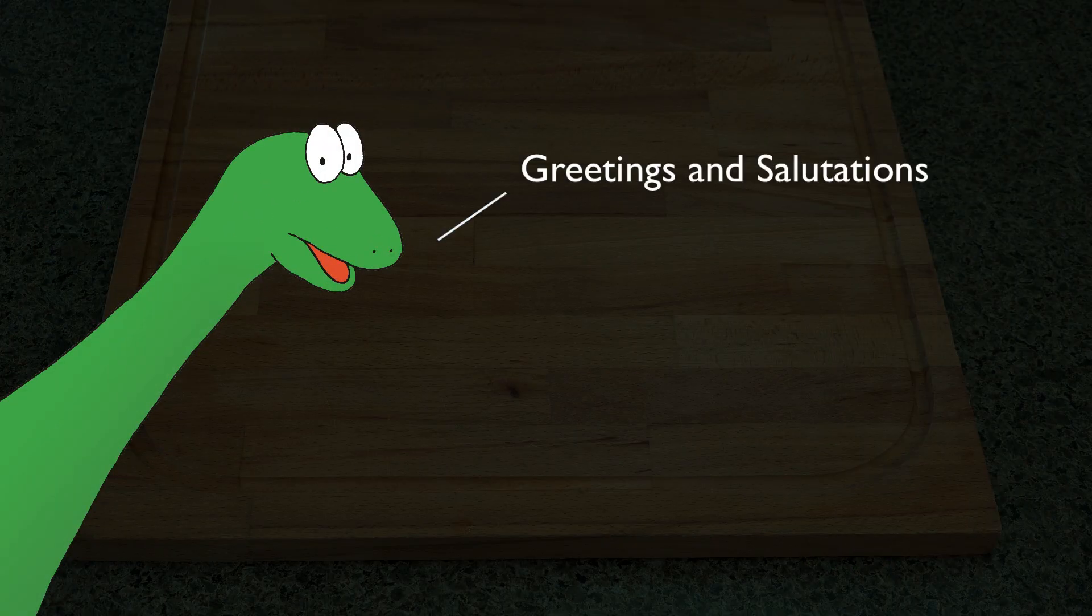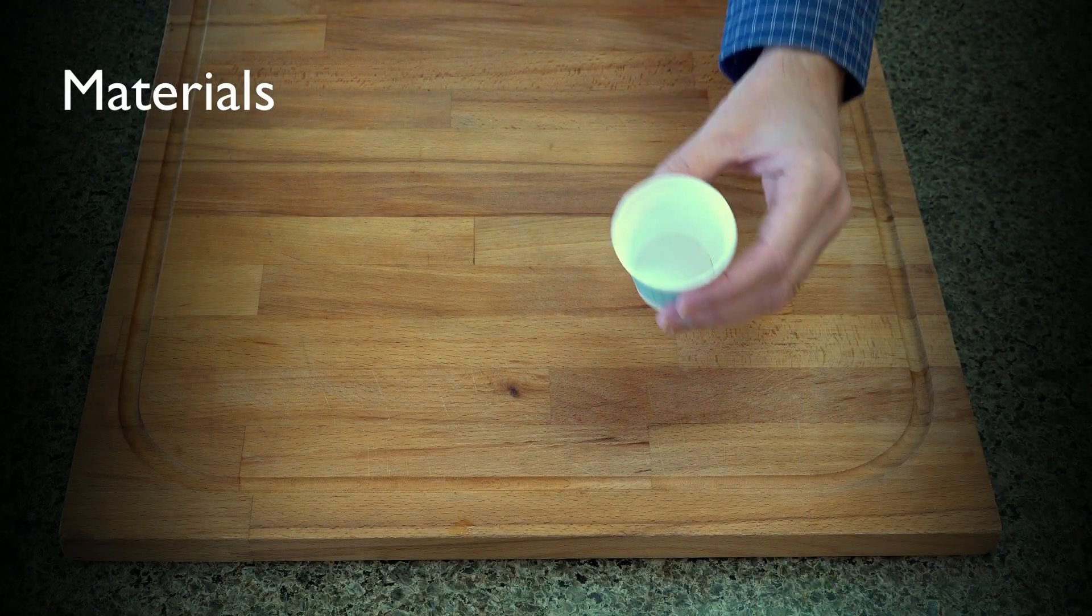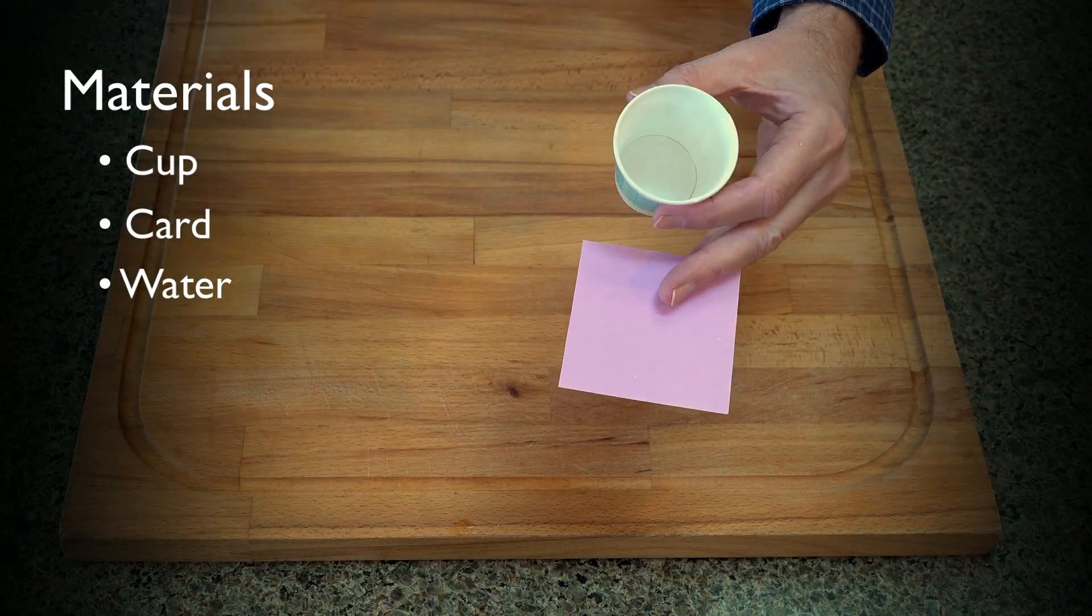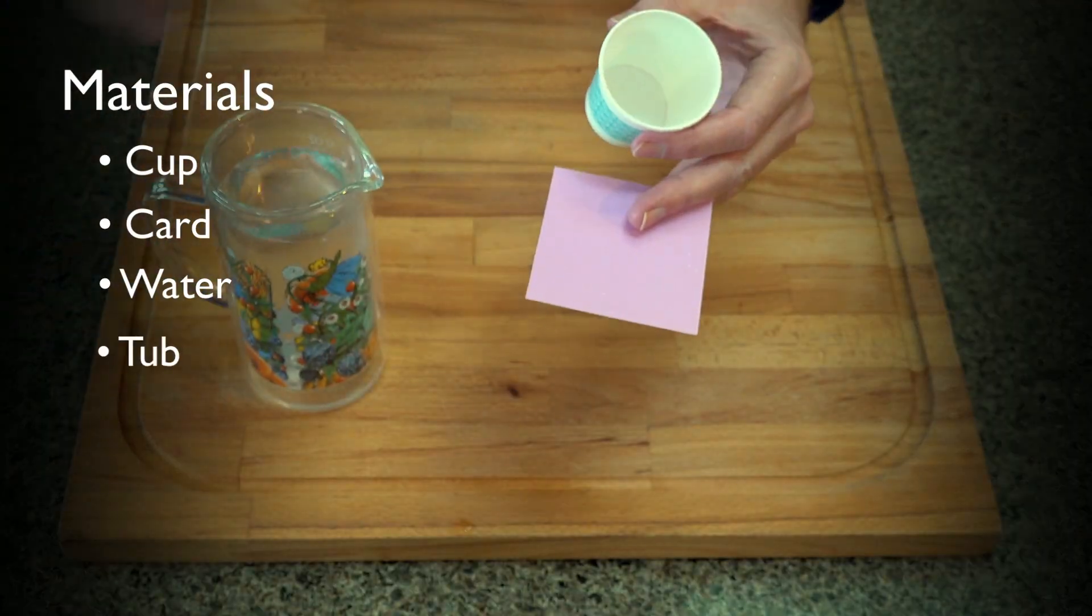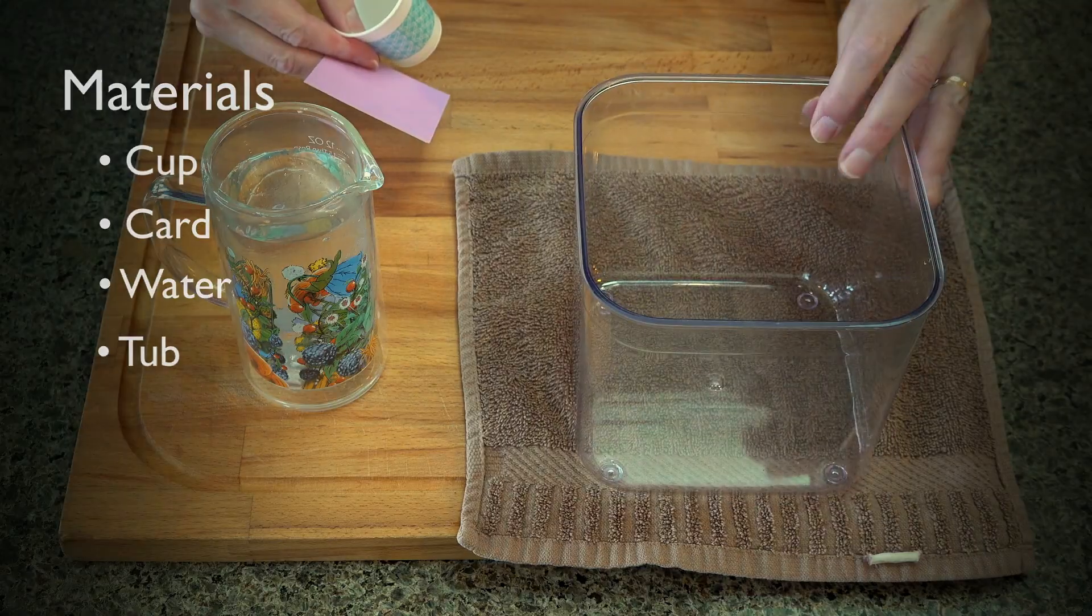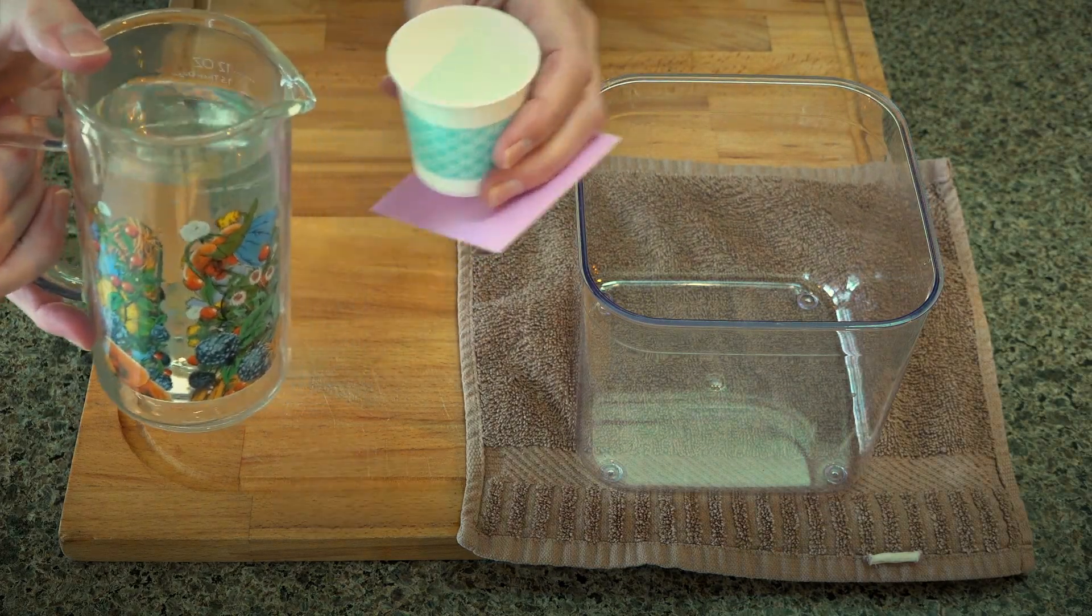Hi, greetings and salutations. What you'll need for this activity is a cup, a card, some water in a tub to collect any water that spills. Let's begin. You'll fill the cup with water.